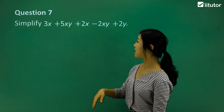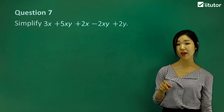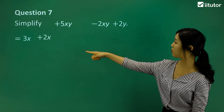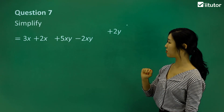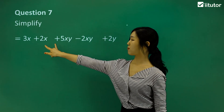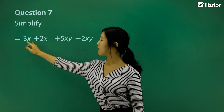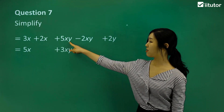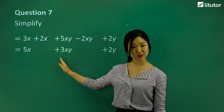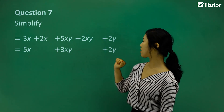Question seven: simplify this larger expression. No matter how big the expression is, just group your like terms. I'll start with my x's — 3x and 2x come together. Then the xy's are grouped together. Finally, the leftover y goes at the end. 3x plus 2x makes 5x. 5xy minus 2xy makes 3xy. And 2y just comes down. So the final answer is 5x plus 3xy plus 2y — no more like terms to simplify.